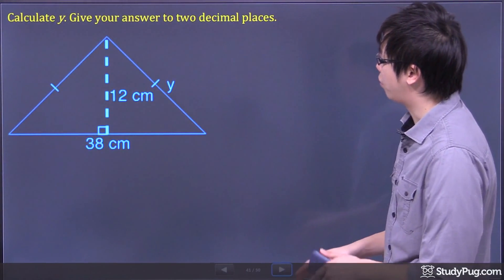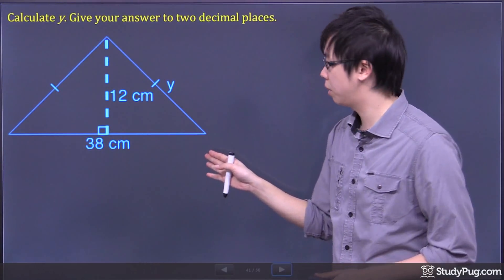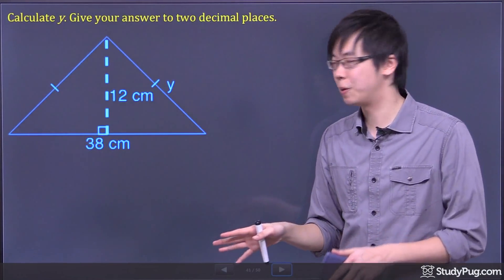Hi, welcome to this question right here. So we got what looks like an isosceles triangle, because it says these two lines are the same, so it's an isosceles triangle.